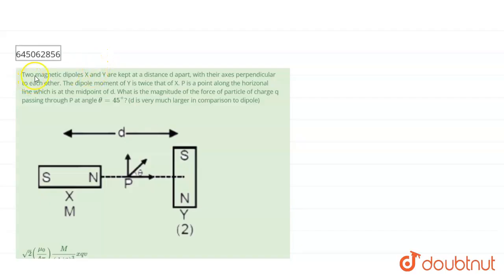Hello students, our question gives that two magnetic dipoles X and Y are kept at a distance d apart with their axis perpendicular to each other. The dipole moment of Y is twice that of X.